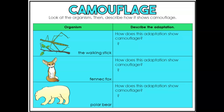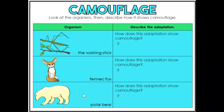For this activity, I want you to look at the organism and then describe how it shows camouflage. How does this walking stick show camouflage? How does it blend in with its environment? What about this fennec fox? Or a polar bear? Think about: a polar bear lives next to snow, and a fennec fox is probably low in the ground.